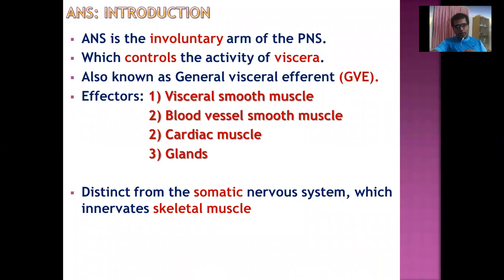The Autonomic Nervous System is distinct from the Somatic Nervous System, which innervates skeletal muscle. The ANS innervates the viscera, while the Somatic Nervous System innervates skeletal muscle. That is why skeletal muscle can be controlled voluntarily, but visceral responses are under involuntary control, controlled by the Autonomic Nervous System.